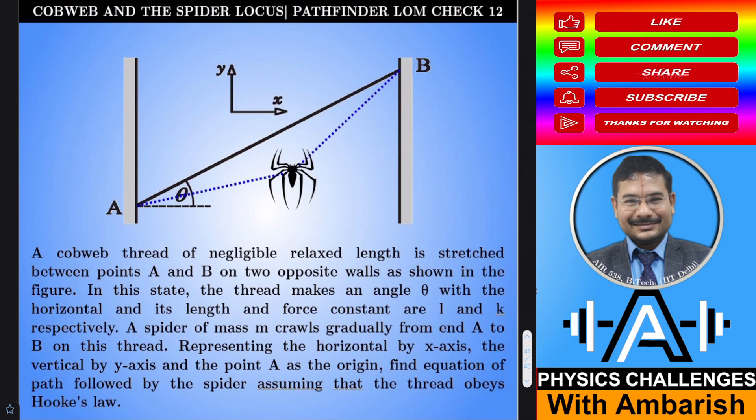One thing that's important is that the thread obeys Hooke's law and the length of the thread itself is negligible. This is to be noted that thread of negligible relaxed length. So you can treat this thread to be like a point spring. Now if you want you can give it a try, I will get into my analysis straight away.